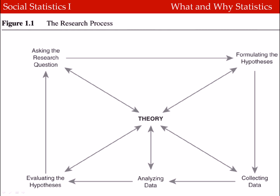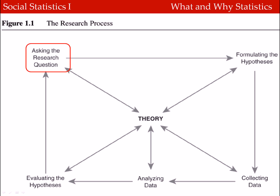The following figure shows a stylized version of the research process. At the heart of the research process is theory — that is, some kind of explanation about how we think the world works. Throughout this research process, theory is going to be guiding every step of the analysis, and in turn, the analysis is going to be guiding theory. We begin analysis by asking some kind of a research question, based on some theory about the way we think the world works.